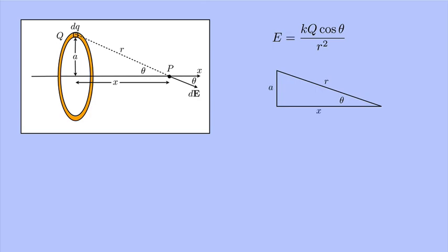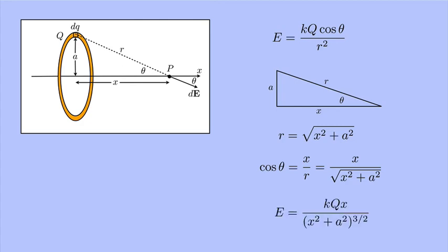And from this triangle, I can see that r equals the square root of x squared plus a squared by the Pythagorean theorem. I can also see that the cosine of theta is x over r, which is x over the square root of x squared plus a squared. So substituting in for r and cosine theta, I get that the electric field is k q x over x squared plus a squared to the 3 halves power. And that's my final answer.